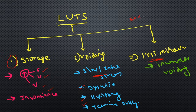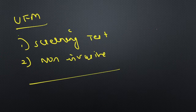The causes for voiding dysfunction include BPH, urethral stricture, detrusor dyssynergia, overactive bladder, or any obstructive etiology. We are going to find out the clue to the etiology with uroflowmetry.